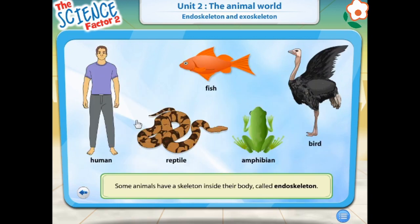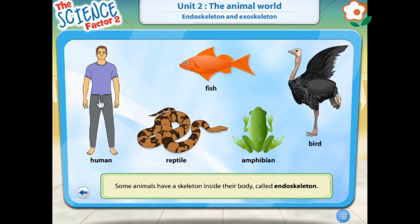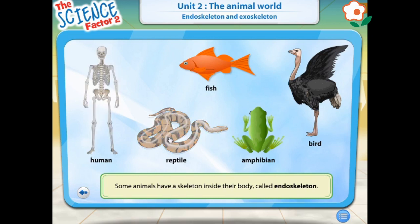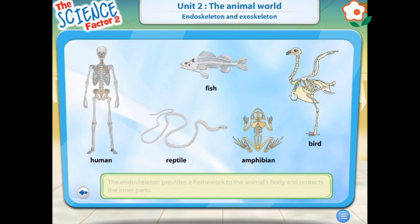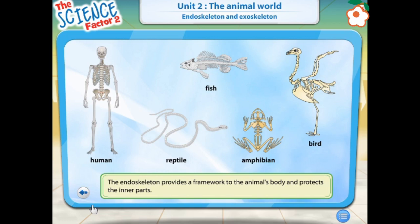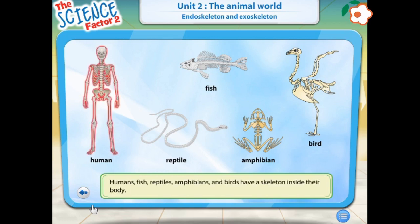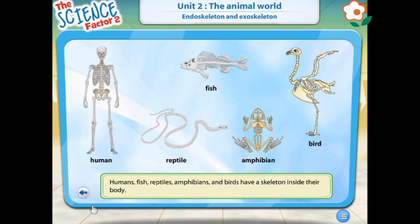Some animals have a skeleton inside their body called endoskeleton. Roll the mouse over these animals to view their skeletons. The endoskeleton provides a framework to the animal's body. It also protects the inner parts of the body. Humans, fish, reptiles, amphibians and birds have a skeleton inside their body.